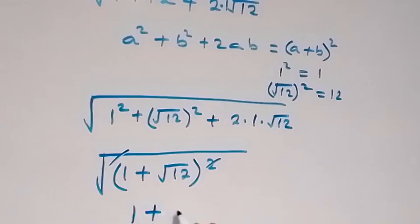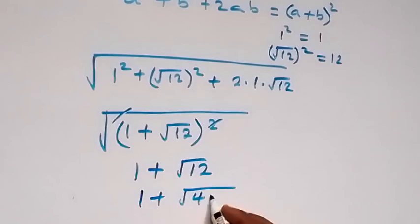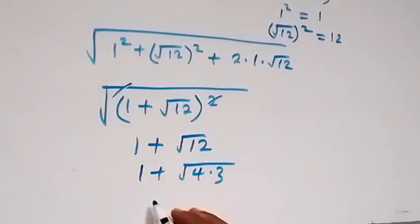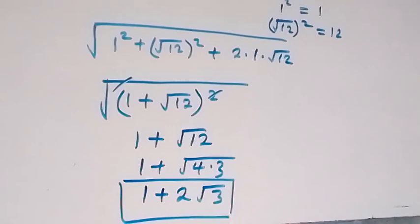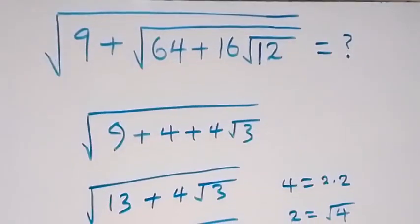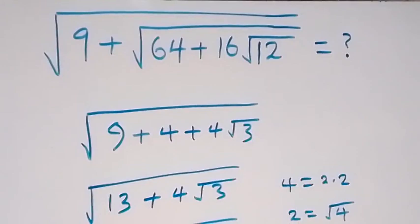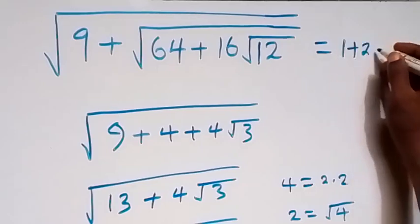And this gives us 1 plus root 12. When we simplify here, root 12 can be written as root 4 times 3. So this is 1 plus root 4 times 3, and root 4 here is 2. So we have 1 plus 2 root 3, which is the final answer to this given problem. Therefore, the problem given here — square root of 9 plus root 64 plus 16 root 12 — is now simplified as 1 plus 2 root 3.